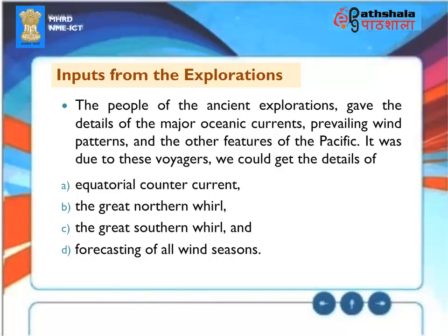Inputs from the Explorations: The people of the ancient explorations provided details of the major oceanic currents, prevailing wind patterns, and other features of the Pacific. It was due to these voyagers that we could get details of the equatorial counter current, the great northern whirl, the great southern whirl, and the forecasting of all wind seasons.